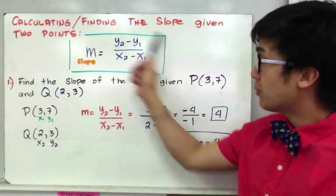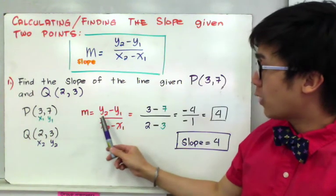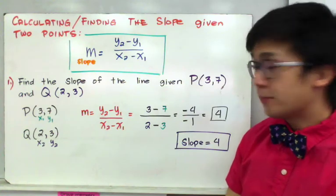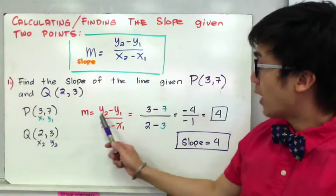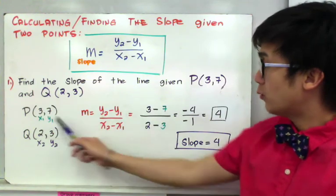we'll be able to use the formula in finding the slope of this line. So m is equal to y sub 2 minus y sub 1 all over x sub 2 minus x sub 1. By direct substitution, y sub 2, which is 3, minus y sub 1, which is 7,